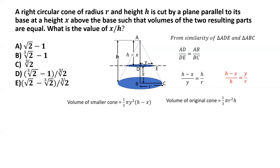Since the plane slices the cone into two parts of equal volume, the volume of the original cone equals two times the volume of the smaller cone. The one-third pi cancels out, and we are left with h divided by h minus x equals 2 times y by r, whole squared.